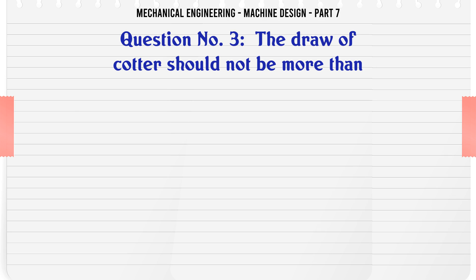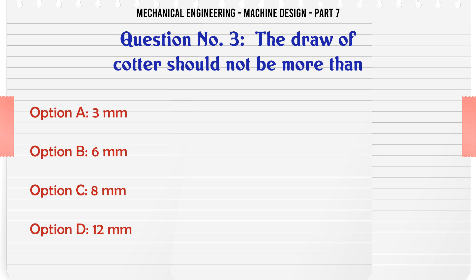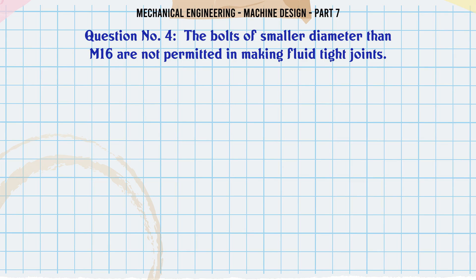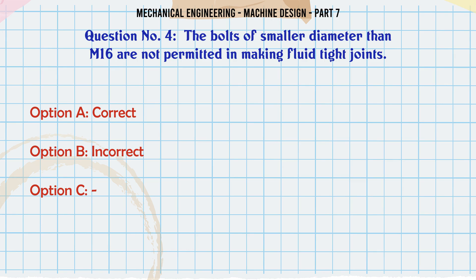The draw of a cotter should not be more than: a) 3 mm, b) 6 mm, c) 8 mm, d) 12 mm. The correct answer is 3 mm.